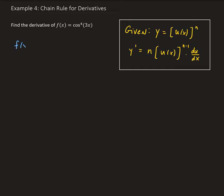So we have f(x) equals cosine to the fourth power — this is really the same thing as cosine of 3x all raised to the fourth power. Applying the general power rule, we bring down the 4 and subtract 1.